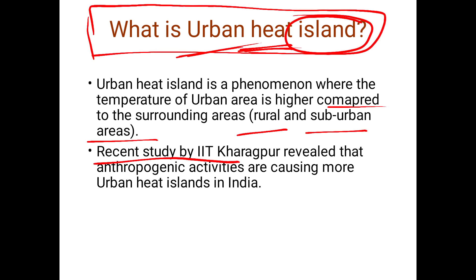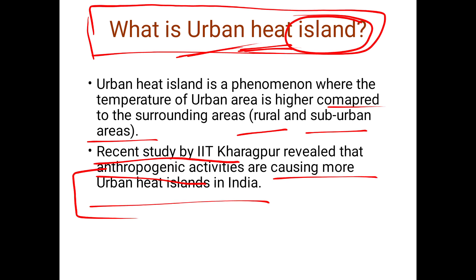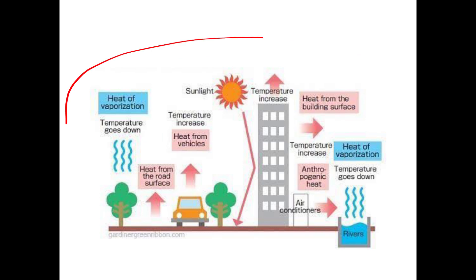Urban heat island is a phenomenon where the temperature of the urban area is higher compared to the surrounding rural or suburban areas. A recent study conducted by IIT Kharagpur has said that anthropogenic activities — man-made activities like burning of fossil fuels and construction of buildings — are causing more and more urban heat islands.